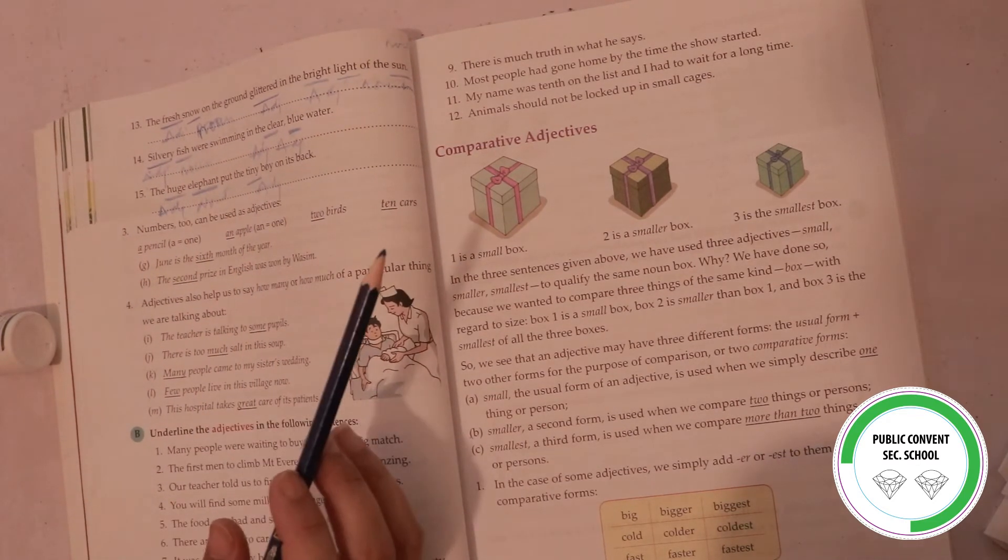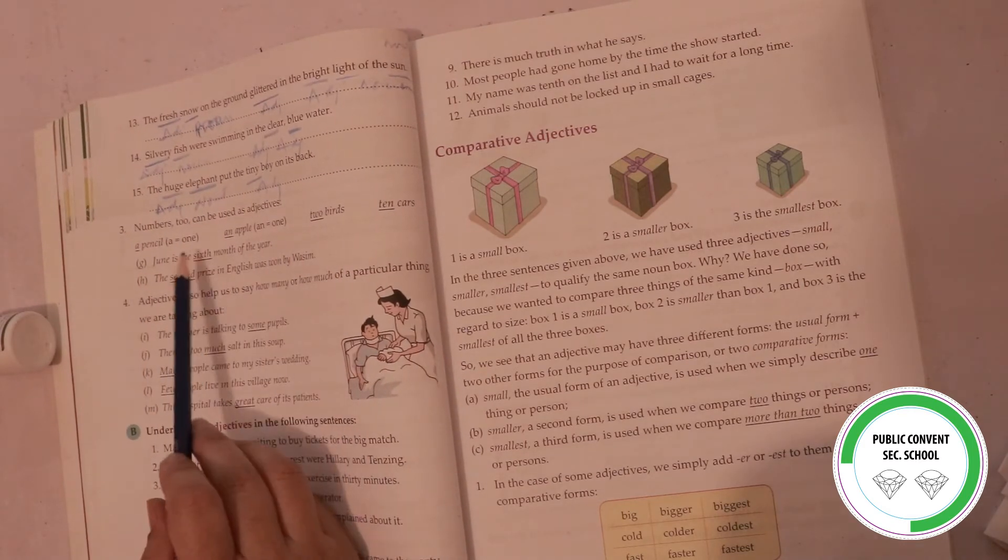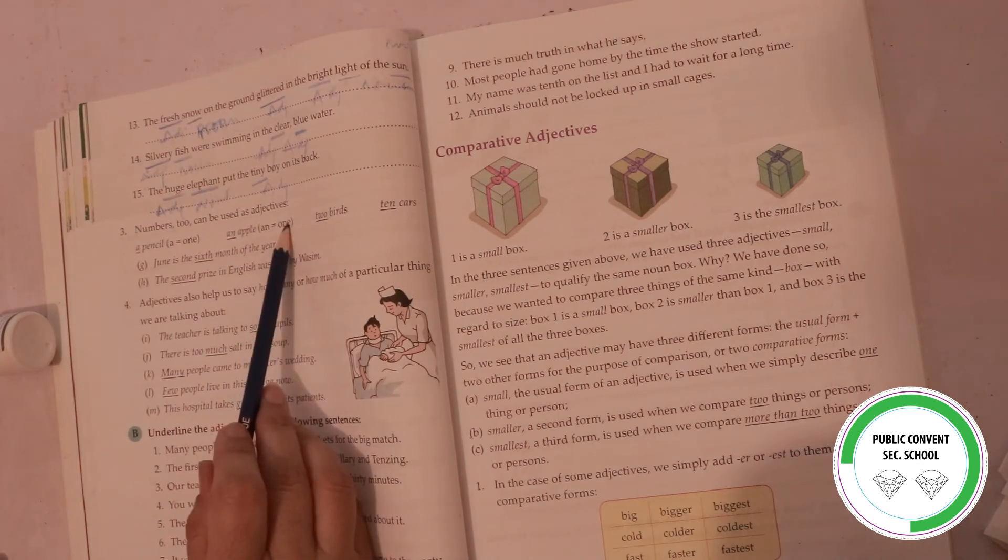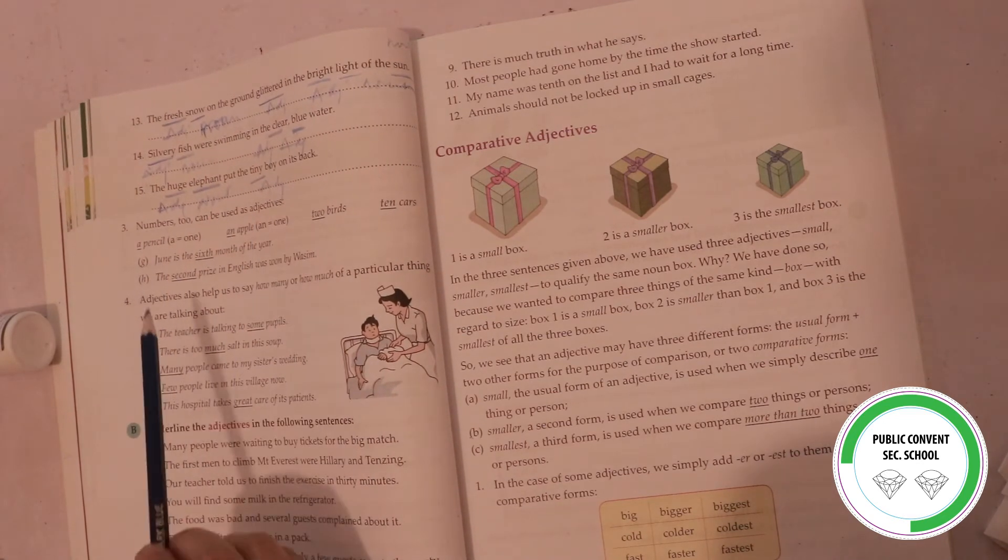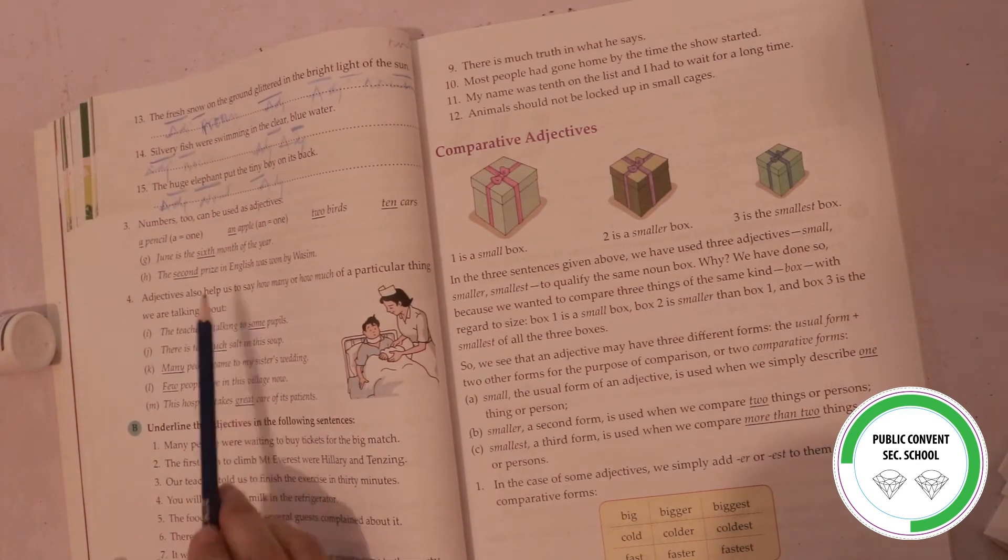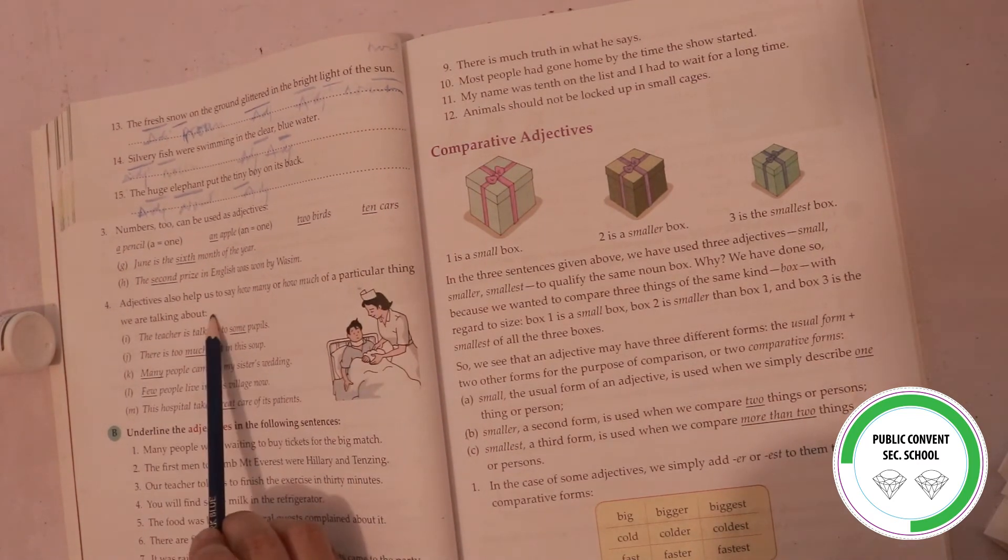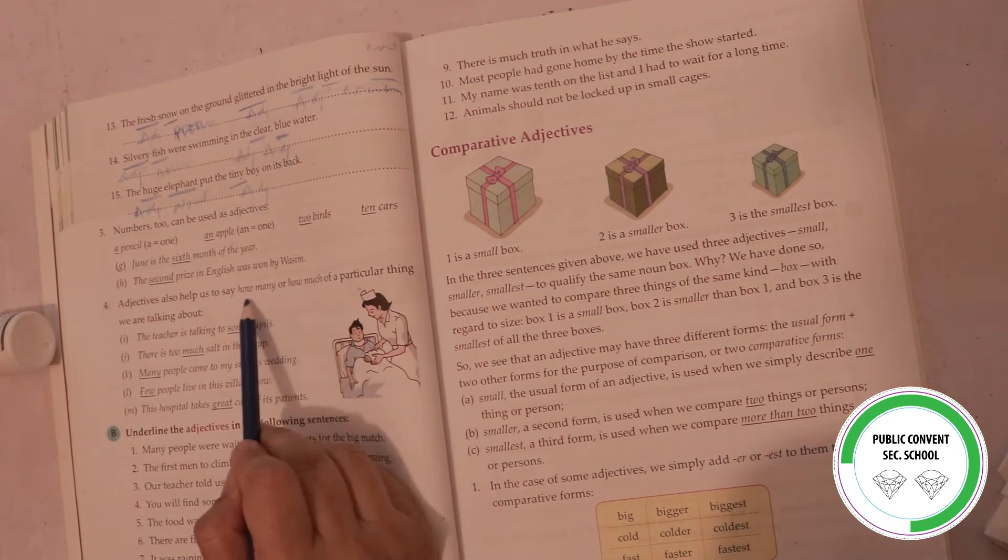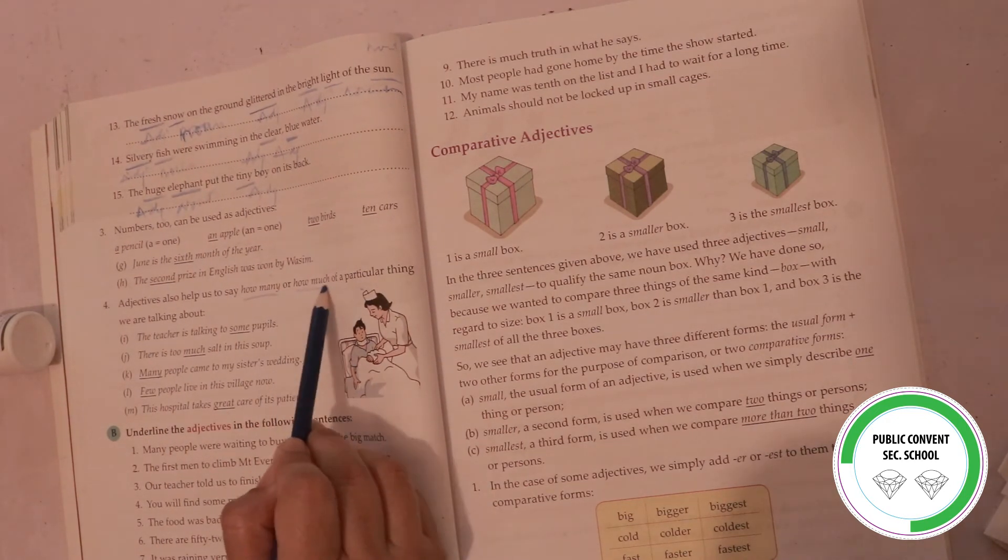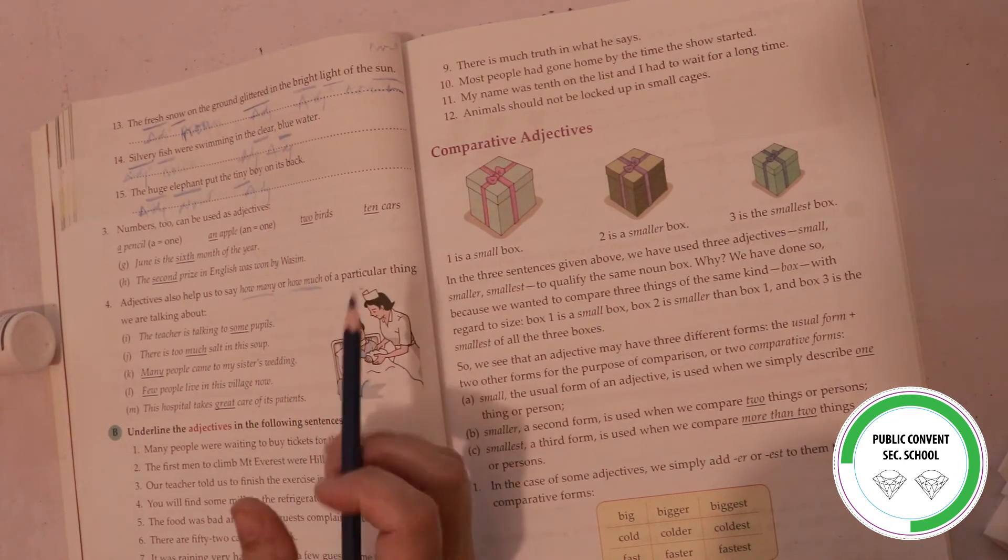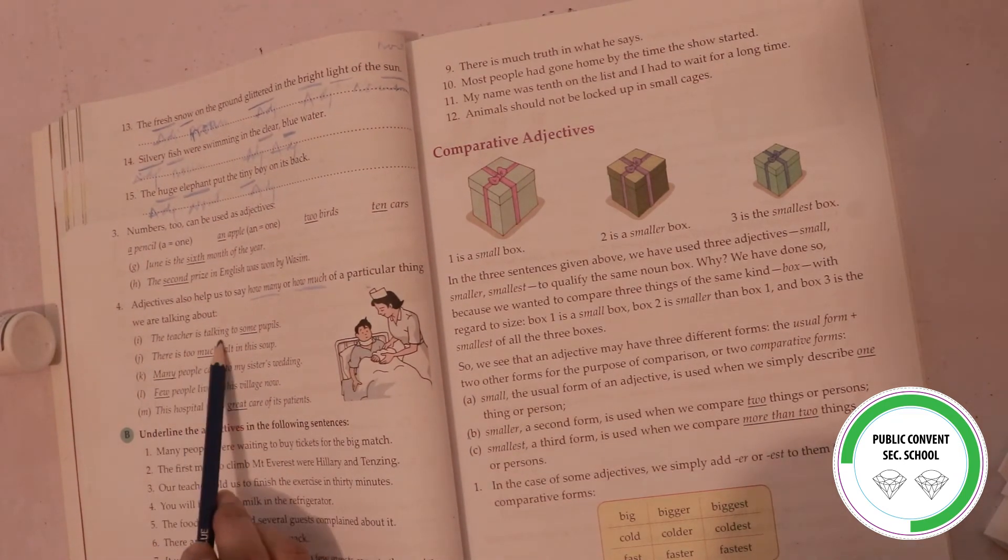Numbers like 1, 2, 3, 4, 5, 6, and first position, second position, one and two - these are all adjectives. These are number adjectives. Adjectives also help us to say how many or how much of a particular thing we are talking about.